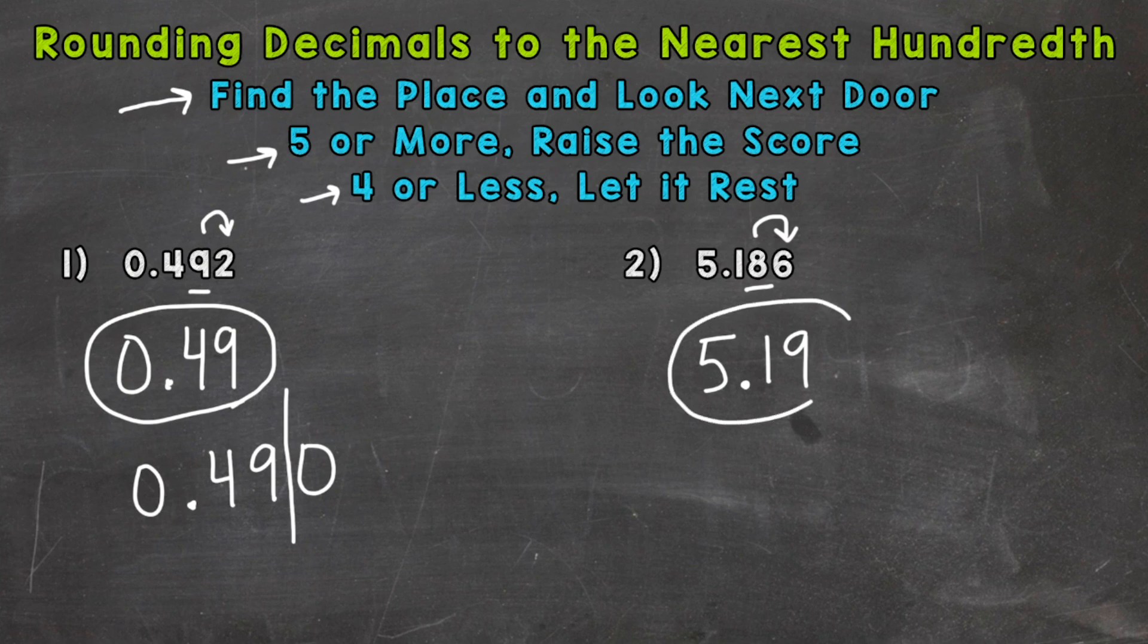So when we round to the hundredths we're seeing for example number two is that decimal closer to 5.18 which means stays the same or is it closer to 5.19 which means we round up. And in this case for number two we round it up.